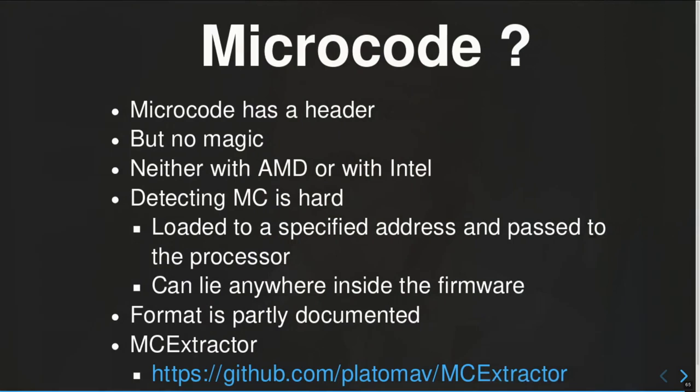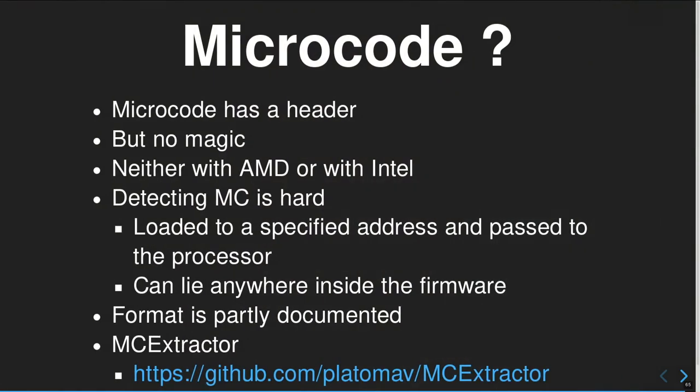I'm not covering microcode because microcode doesn't have a real magic value you can look for; there is a header but no magic. It's very specific to AMD or Intel, and detecting microcode in your image is quite hard — you can only do statistics about the bytes and maybe find something microcode-related, because the microcode is loaded by your firmware at a non-fixed offset. Linux can run microcode updates on your CPU by pointing it to an address. If you know you're looking at a microcode update, there is an extractor tool by Platomov, who also wrote the excellent ME extractor tool.